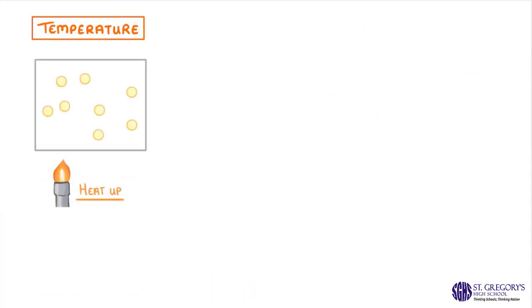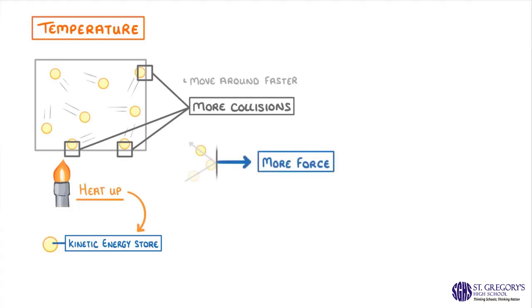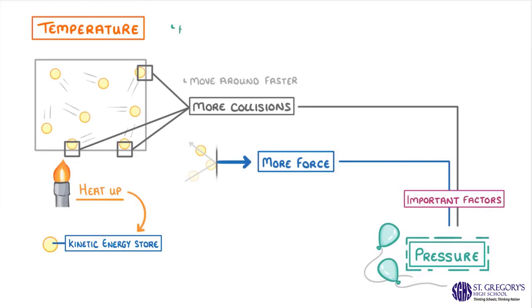Let's start with temperature. If we were to heat up our gas, we would be transferring energy to the particles' kinetic energy stores. So all of our particles would start to move around faster. And because they're all moving around faster, there'd be more collisions with the walls of the container, and each individual collision would involve more force. As these are the two important factors that determine pressure, we can be sure that pressure increases with temperature.